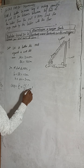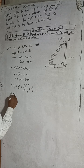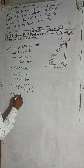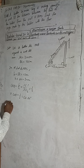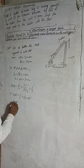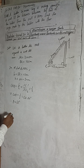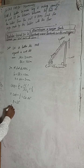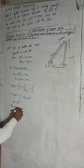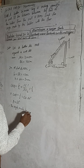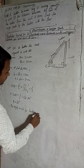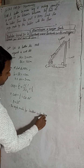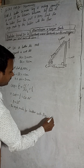So cos theta equals 12 by 24, which simplifies to 1 by 2. Therefore cos theta equals 1/2, and since cos 60° = 1/2, the angle made by the ladder with the floor is equal to 60 degrees.